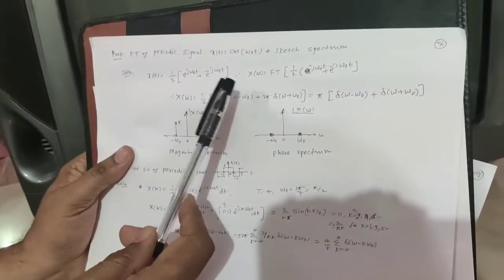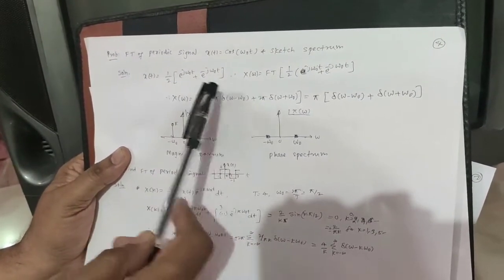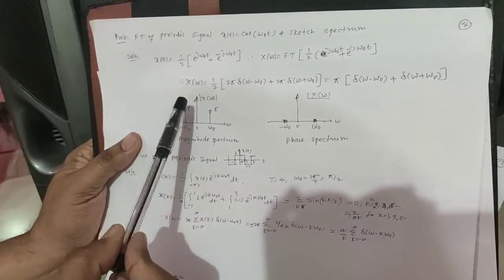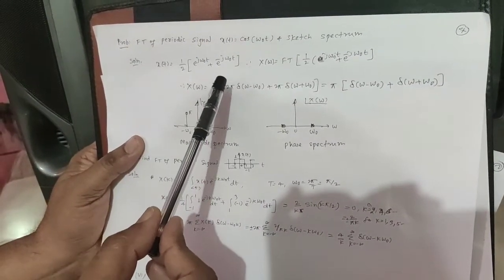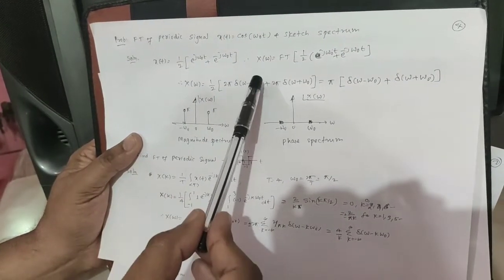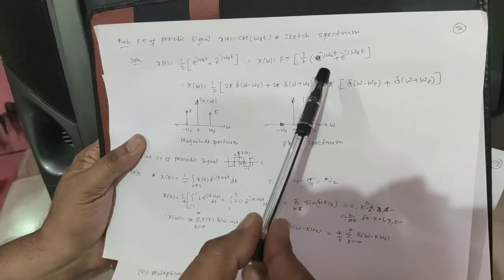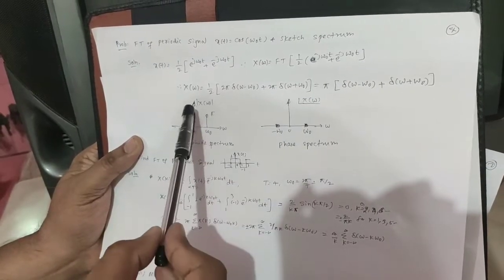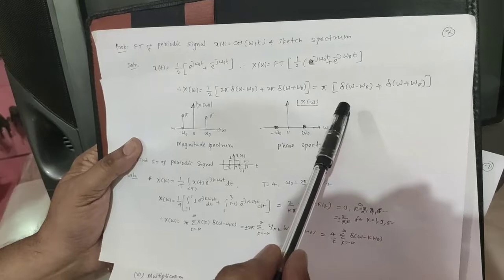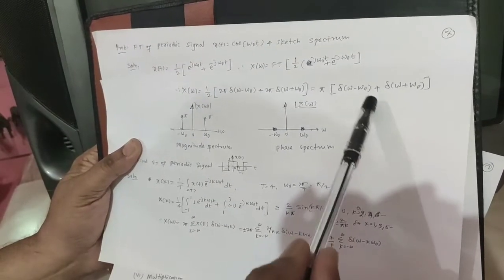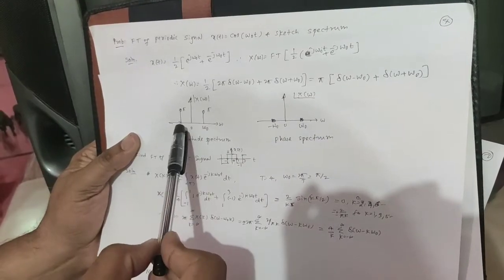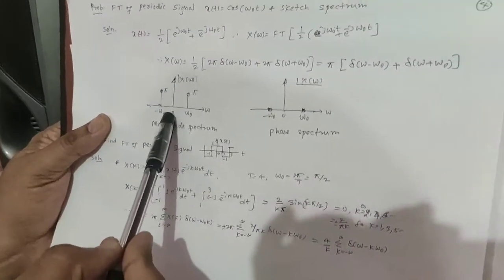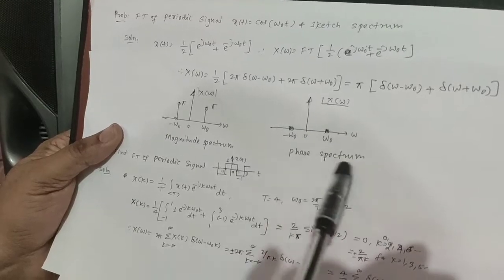We will solve problems on the Fourier transform of a periodic signal. Consider x(t) = cos(ω₀t); we have to sketch its spectrum. By Euler's identity, x(t) = (1/2)[e^(jω₀t) + e^(−jω₀t)]. Substituting the formula, X(ω) = π[δ(ω − ω₀) + δ(ω + ω₀)]. We can then draw the magnitude spectrum: it equals π at ω = +ω₀ and π at ω = −ω₀. There is no phase angle, so the phase spectrum is zero.